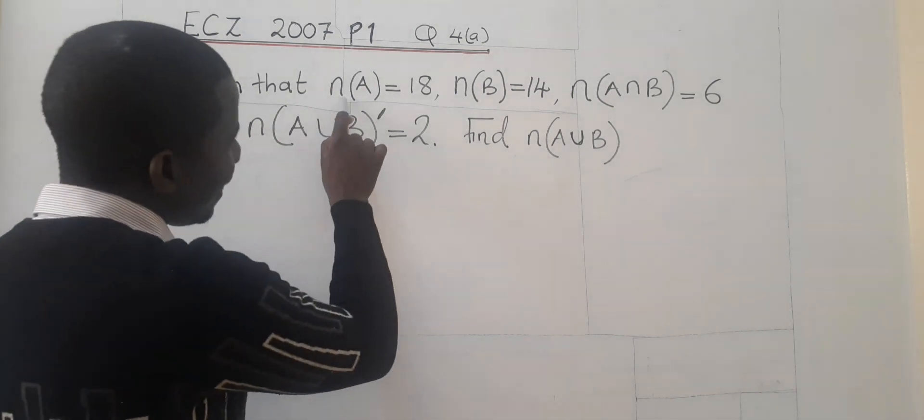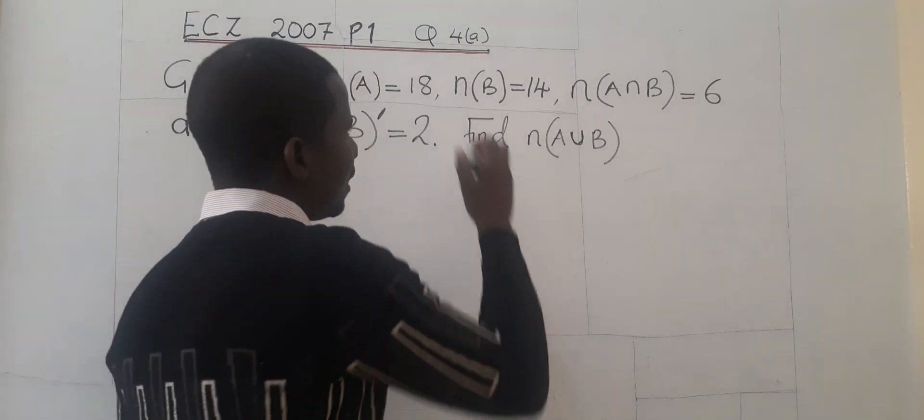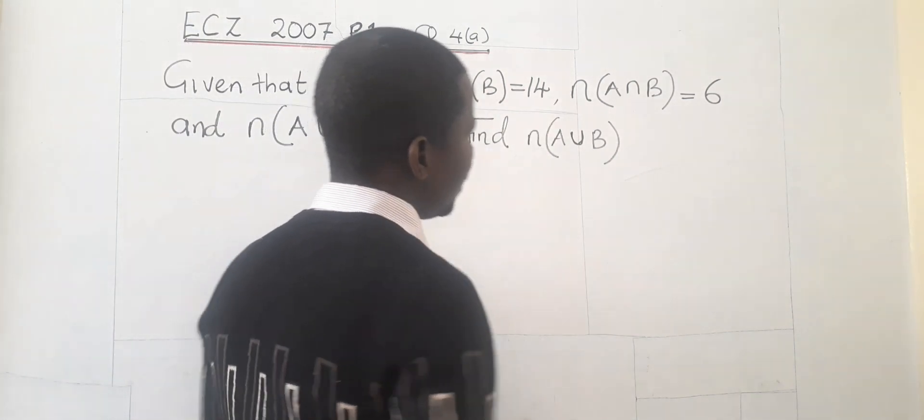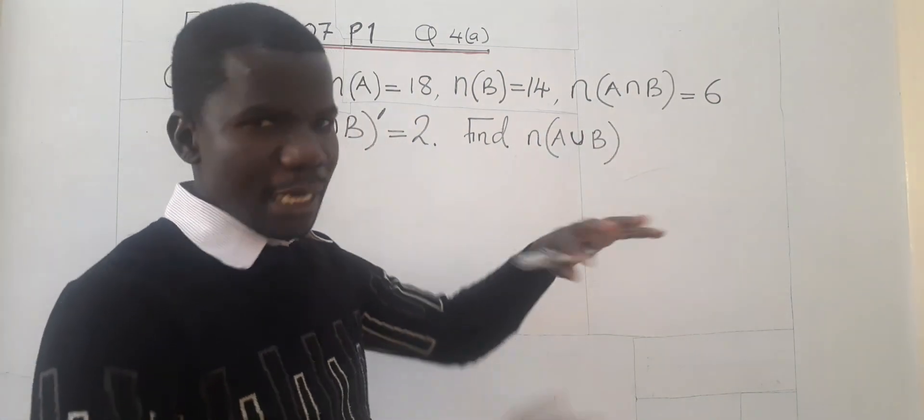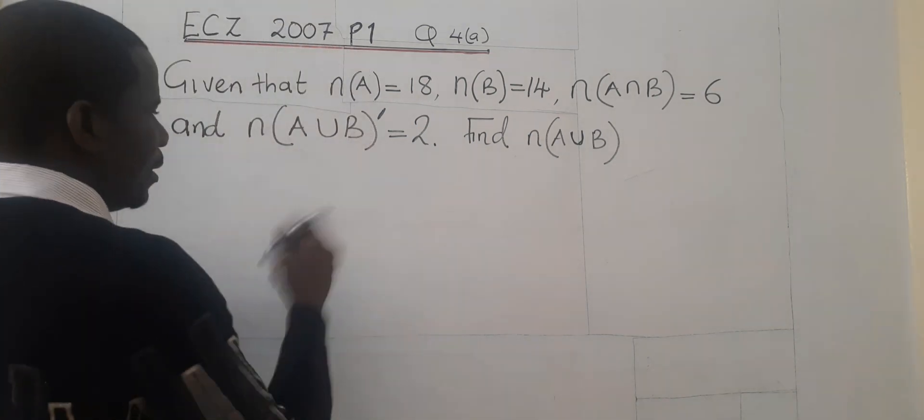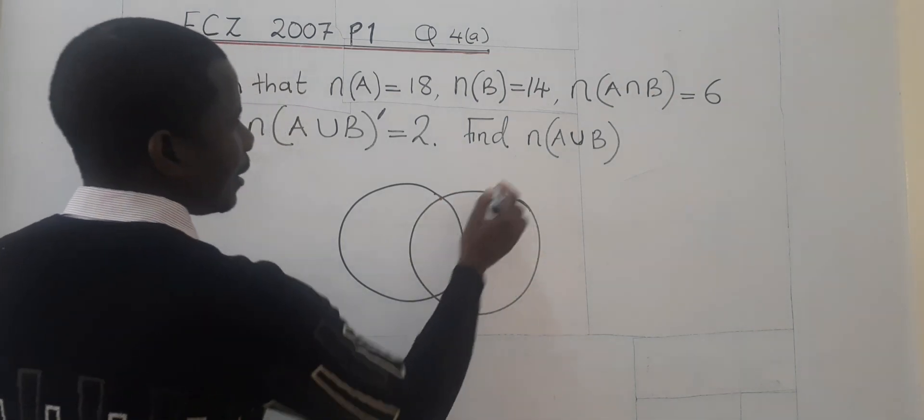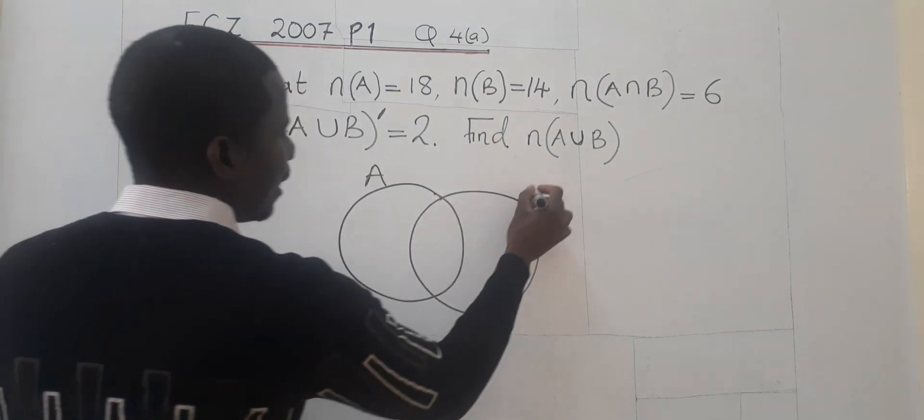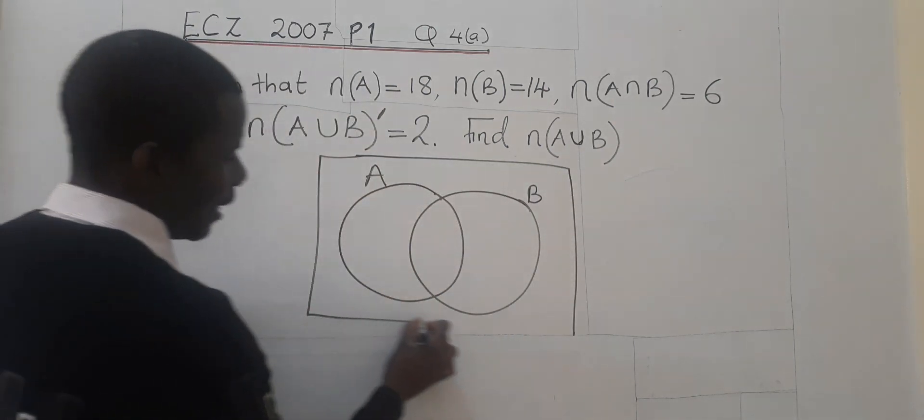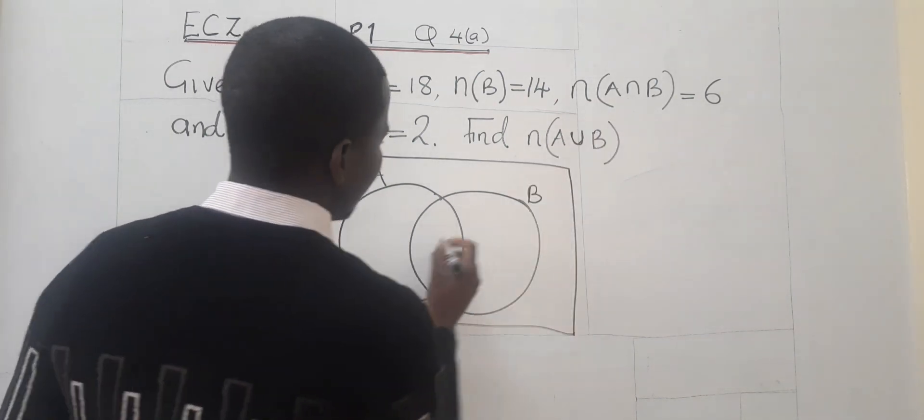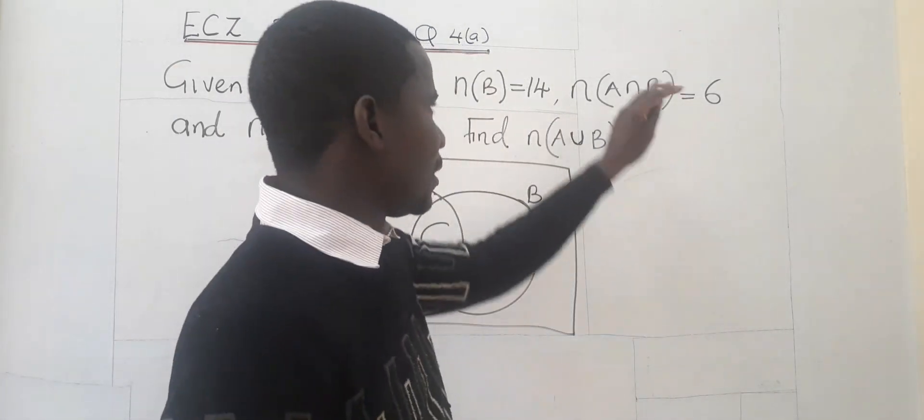Given that the number of elements in set A is 18 and the number of elements in set B is 14, the number of elements in the intersection of A and B is 6. The number of elements in the intersection, this is our intersection.